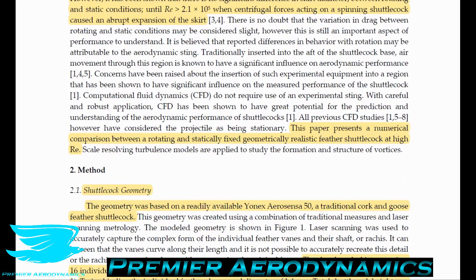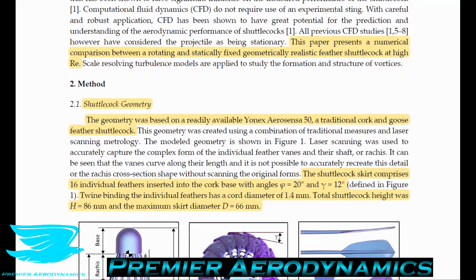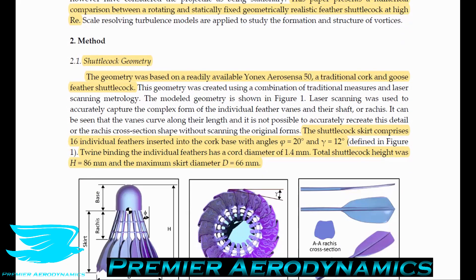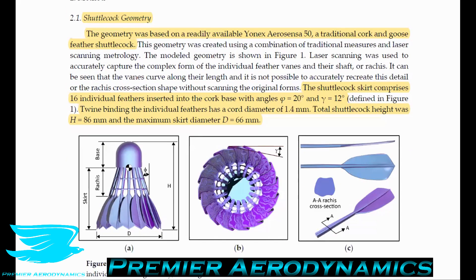This paper presents a numerical comparison between a rotating and a statically fixed, geometrically realistic feather shuttlecock at higher Reynolds numbers. The geometry is based on the Yonex AeroSensor 500, a traditional cork and goose feathered shuttlecock. The shuttlecock skirt comprises 16 individual feathers inserted into the cork base.